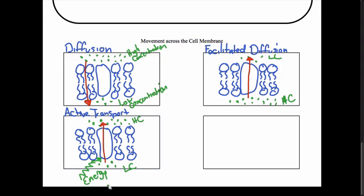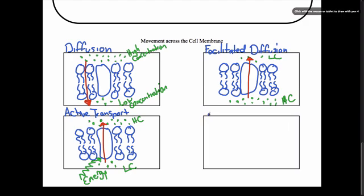So that's active transport — those are our three main ways that molecules can move across the cell membrane. The last type is a special kind of facilitated diffusion because it involves water. Water is one of the most important molecules for our cells, so it gets its own special name: osmosis. It is still facilitated diffusion, but because it involves water, scientists gave it the special name osmosis.